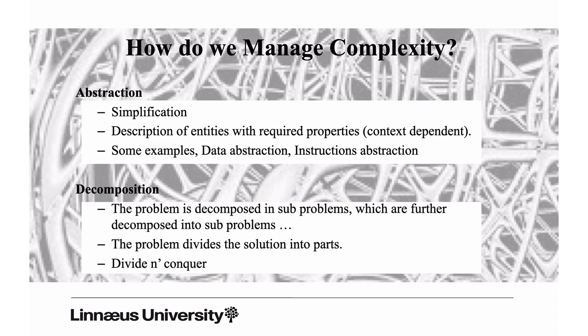The second technique is decomposition, and this is the main strategy for software architects. One characteristic of a complex problem was highlighted by Nobel laureate Herb Simon in his paper 'Architecture of Complexity.' He observed that complex systems are composed of subsystems — you can always identify parts of a system where the communication between elements within that part is more intense than communication to other parts. This property is used to identify subsystems.